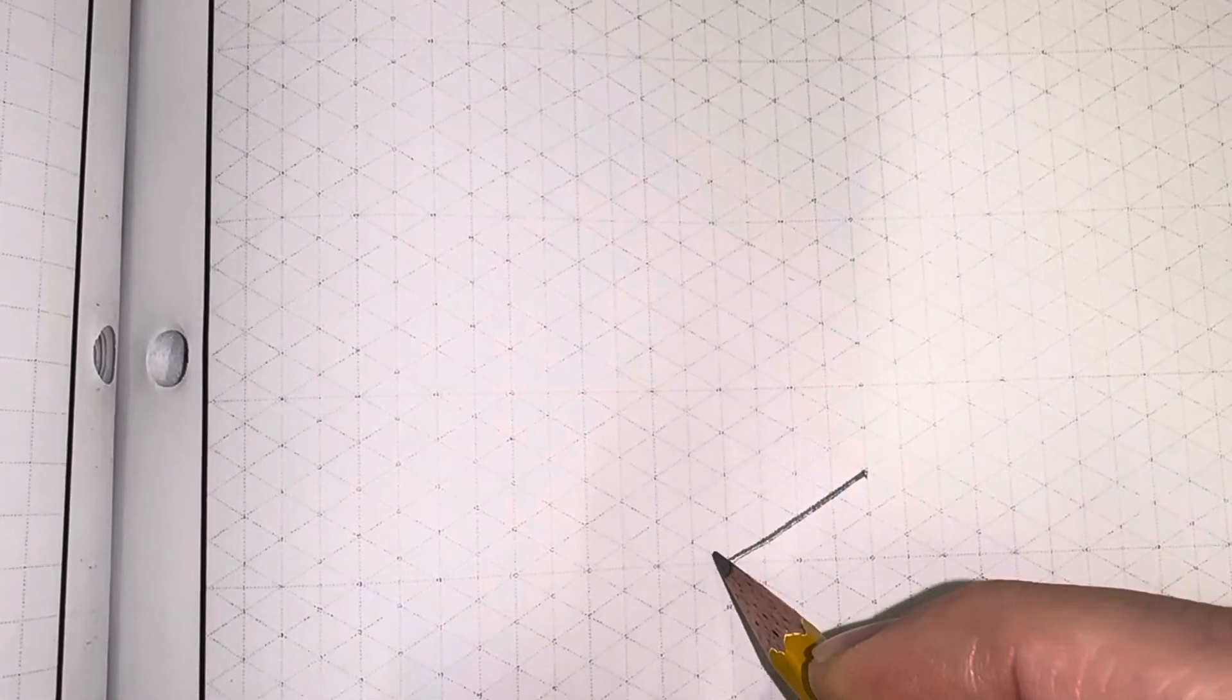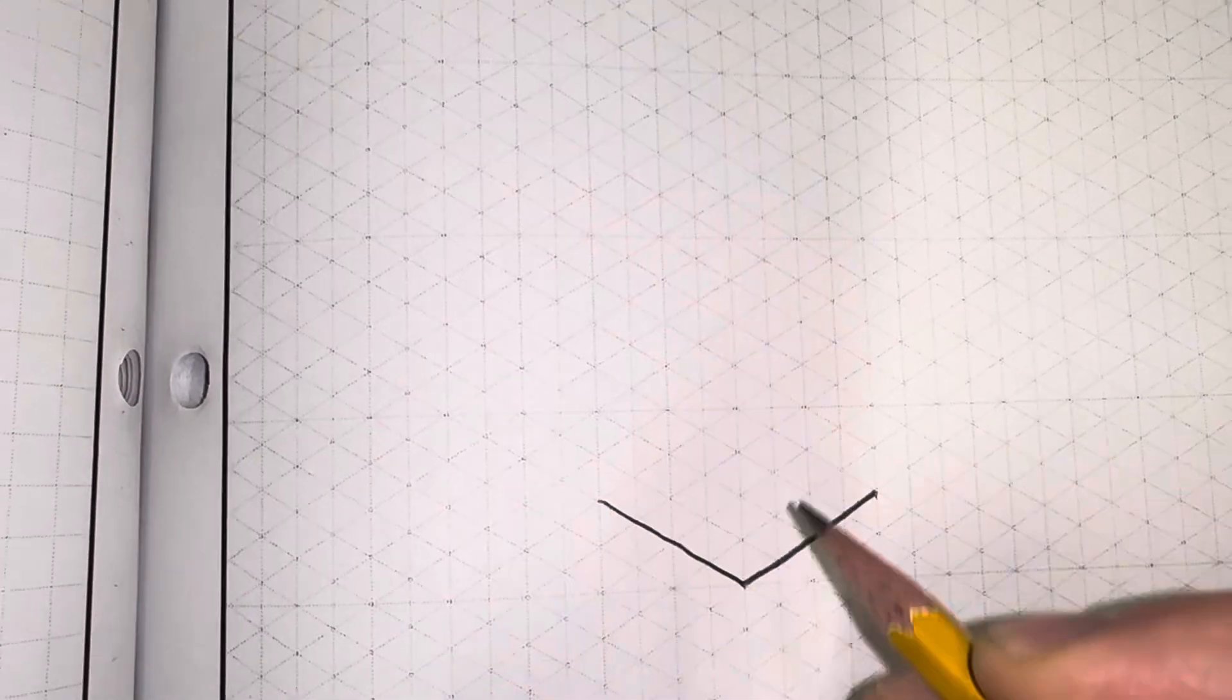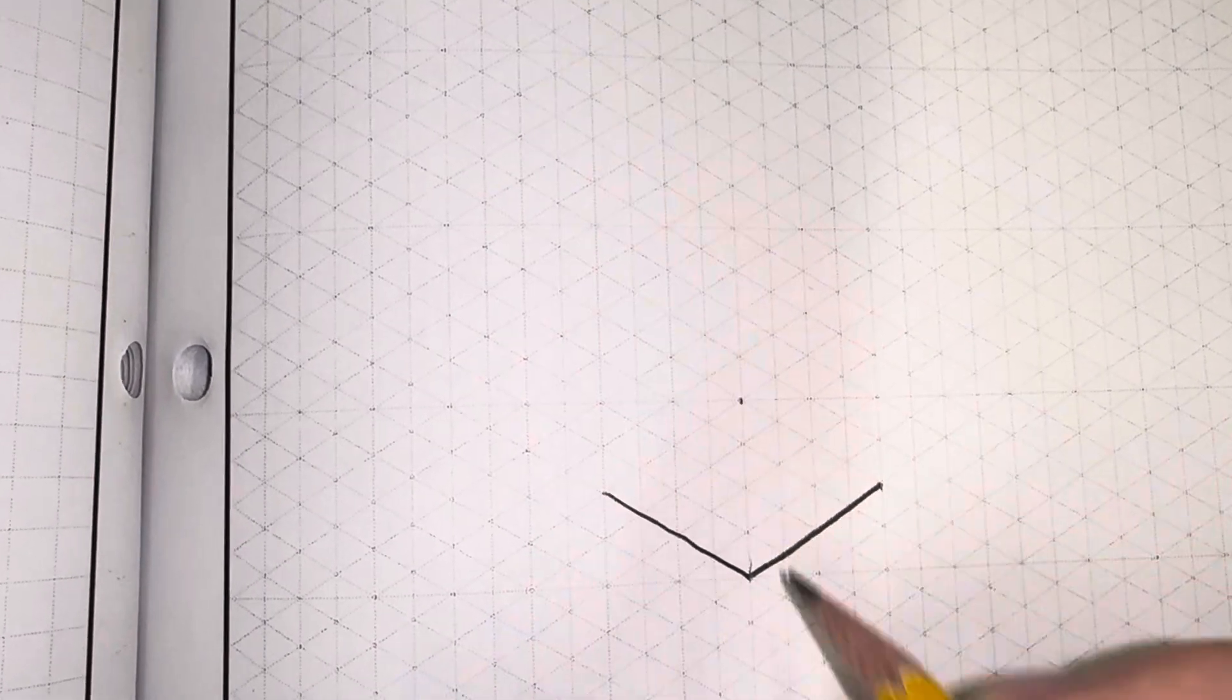So I'm going to do a line length of four, a line length of four as well. I'm going to go four up. I'm going to mark my point.